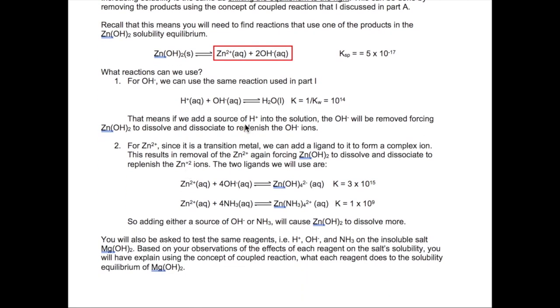This means that we will need to add a reagent that can produce H+. Now what about if we want to find a reaction that can be coupled to the zinc ion? Well, it's useful to remember that zinc is a transition metal ion. As a result, it can form complex ions if we add an appropriate ligand. So there are two possible ligands we can use in this case, either hydroxide or ammonia.